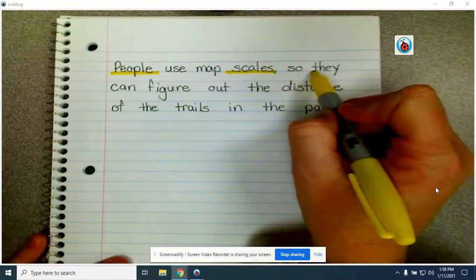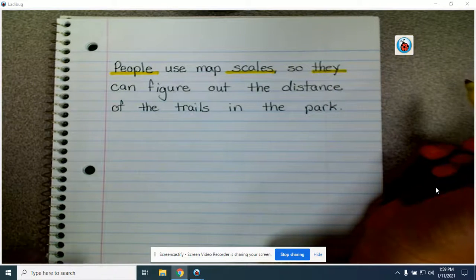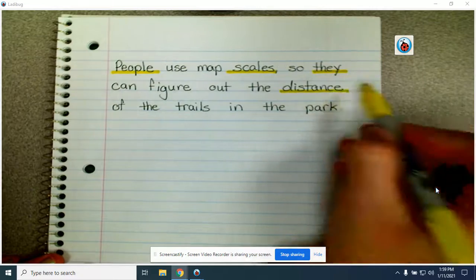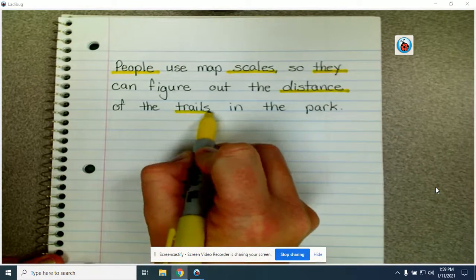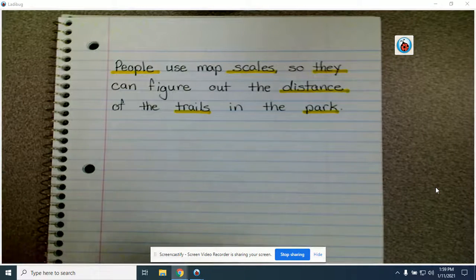So they, they is a pronoun. It names a group of people. Can figure out the distance. It's a thing. Of the trails. It's a place. In the park. That's also a place. Lots of nouns in our sentence today.